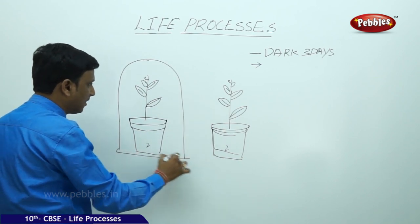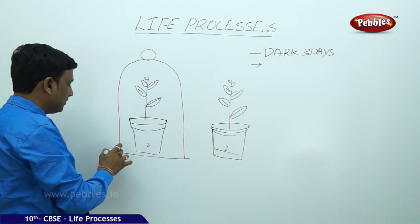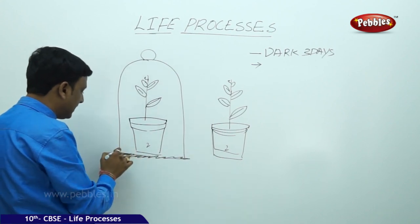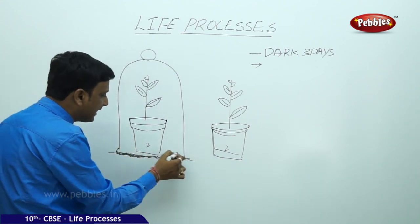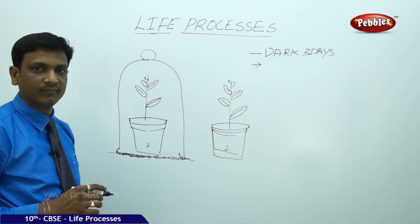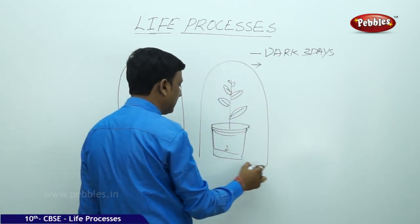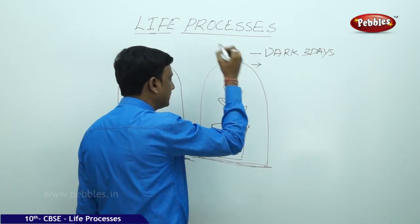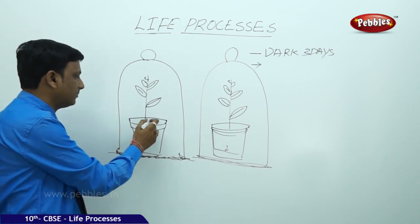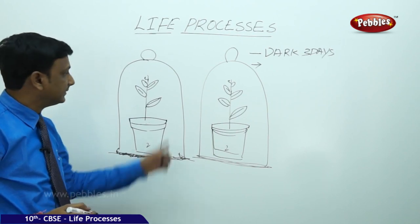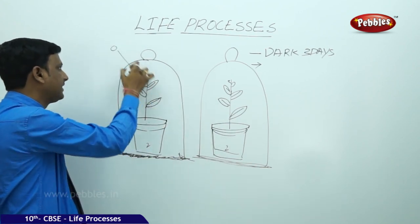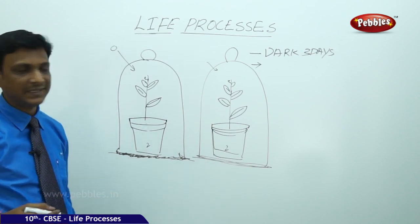We take a bell jar and cover one plant with it. The bottom of the bell jar is kept in contact with the surface and vaseline is applied to prevent entry of air. The same arrangement is made for a second plant under another bell jar. Both plants are in sunlight, well-watered, and have green leaves — so they have chlorophyll, water, and sunlight — but air is prevented from entering.